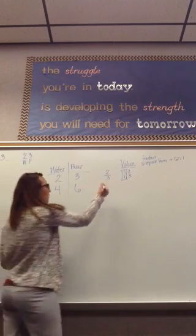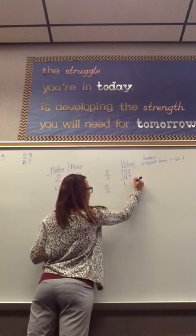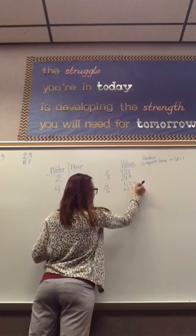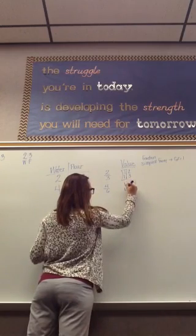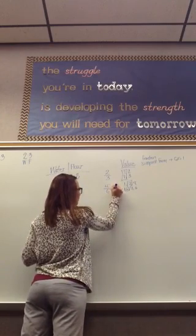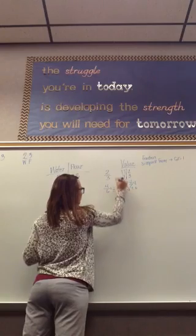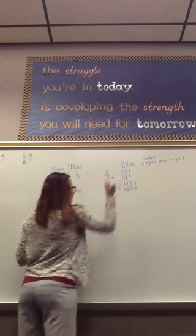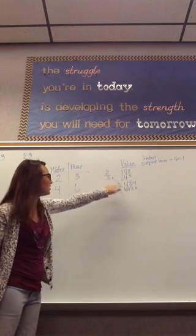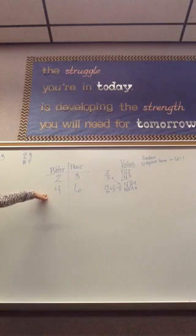So now we can find the value of 4 to 6. When we divide by the greatest common factor, we get 2 thirds, which is equivalent to 2 thirds. So I know these ratios are equivalent.